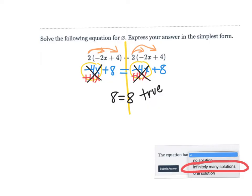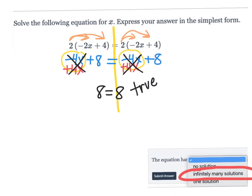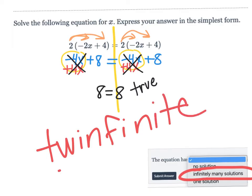The one side is equal to the other side. That means any value that I sub in for x would make a true statement. Any answer out there. Infinite solutions. So keep an eye out for twins or twinfinite solutions is a good way to remember it as well. Twins.